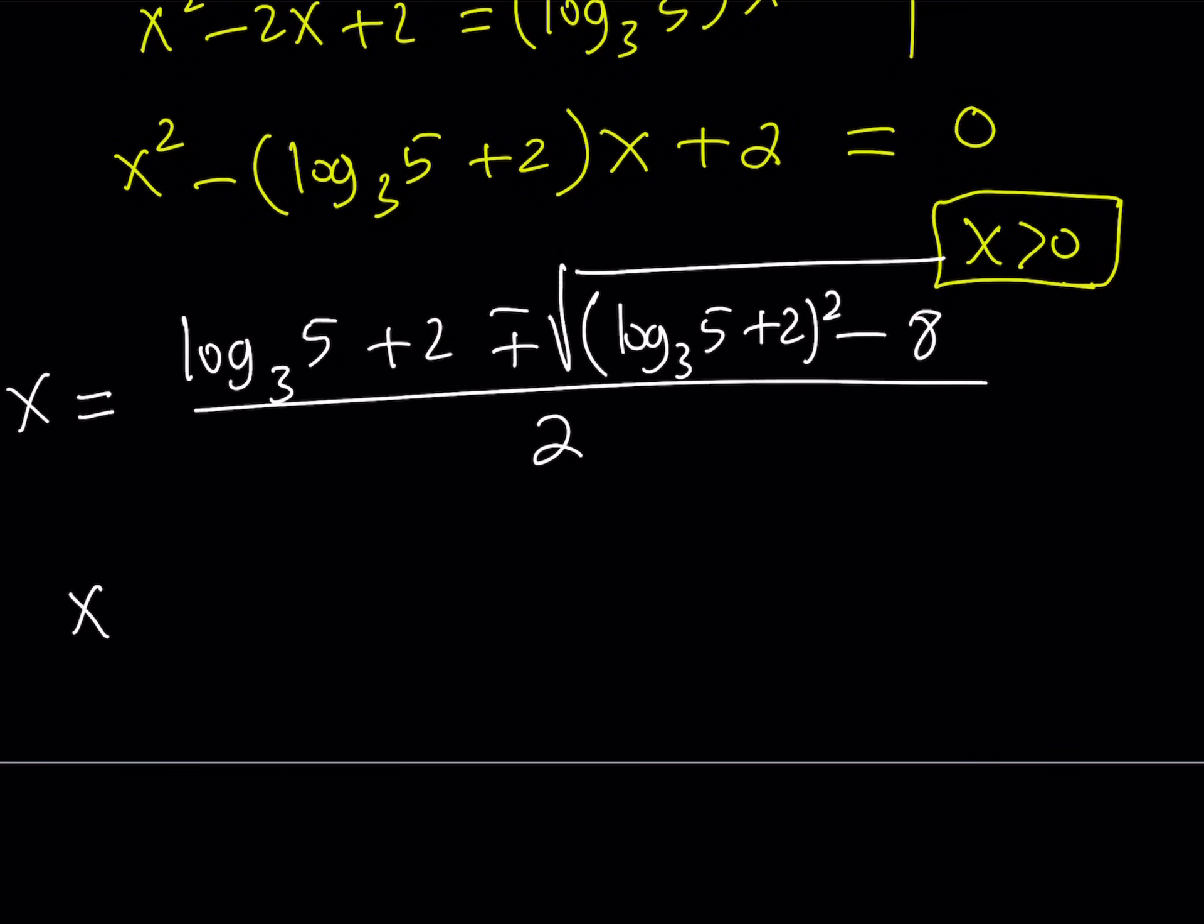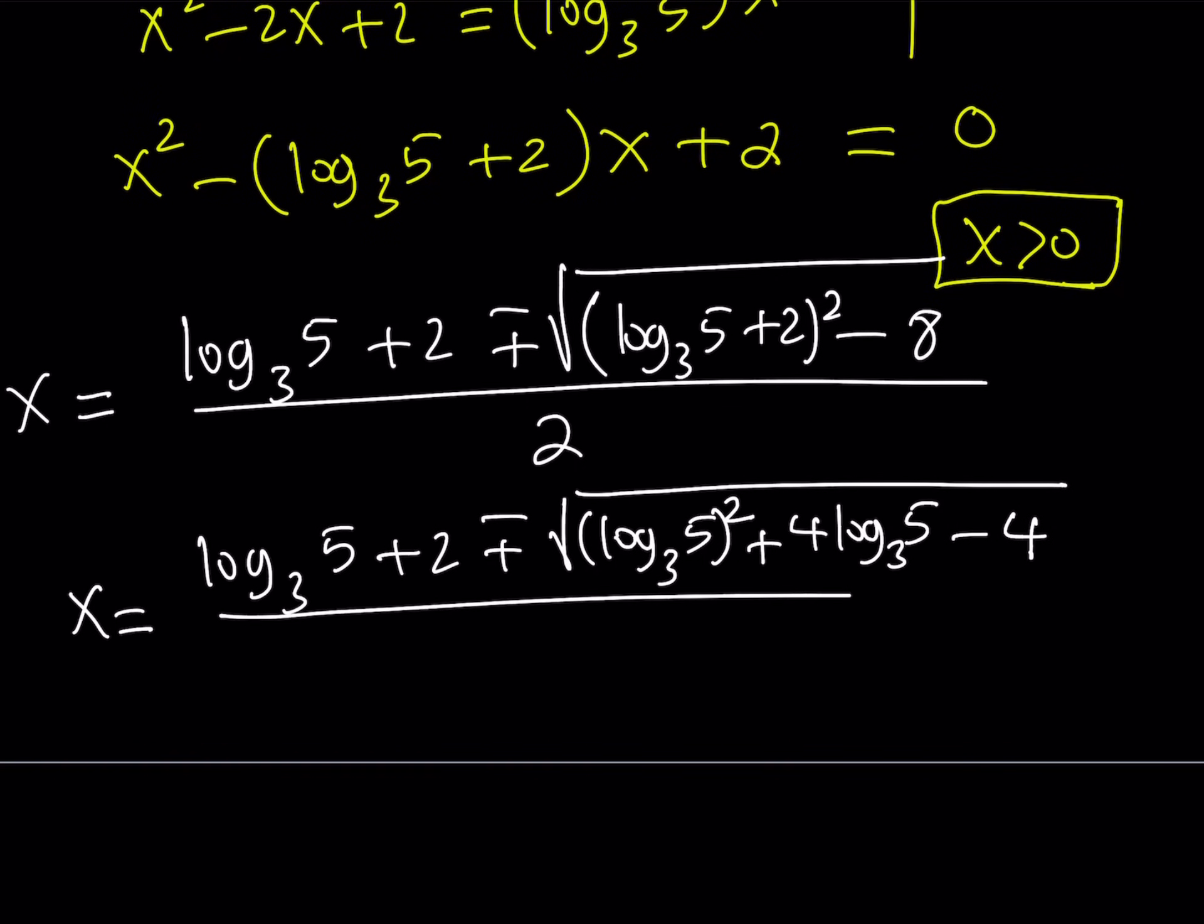Okay. So let's go ahead and simplify this expression a little bit. See what happens. Log base 3 of 5, plus 2, plus minus. Now here, we're going to square the expression. So it's going to give me log base 3 of 5, quantity squared, plus 4 times log base 3 of 5, plus 4 minus 8. It's just going to give me minus 4 there. And then all of that is going to be divided by 2.